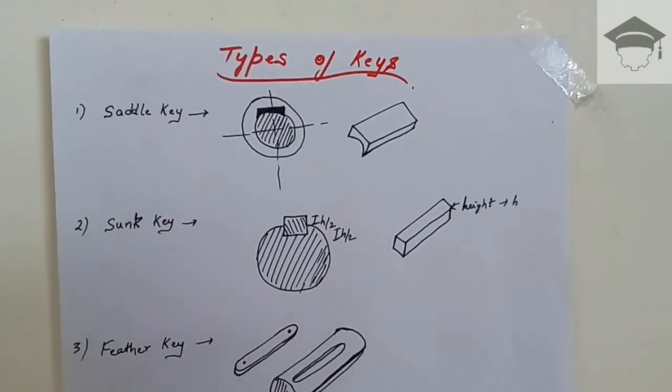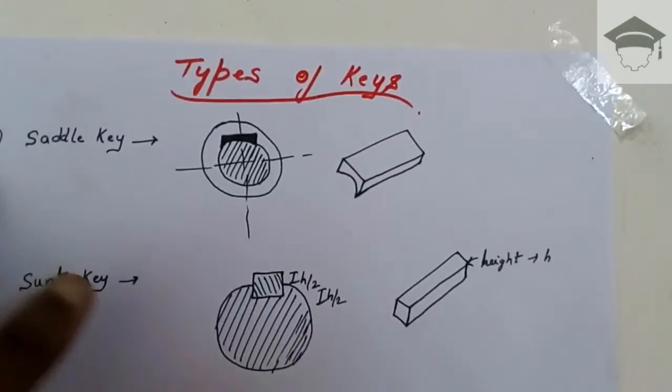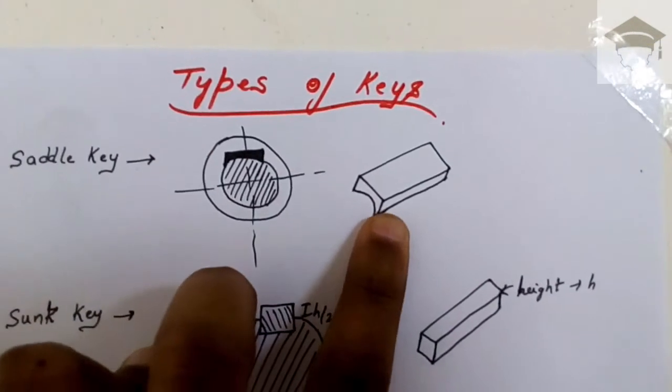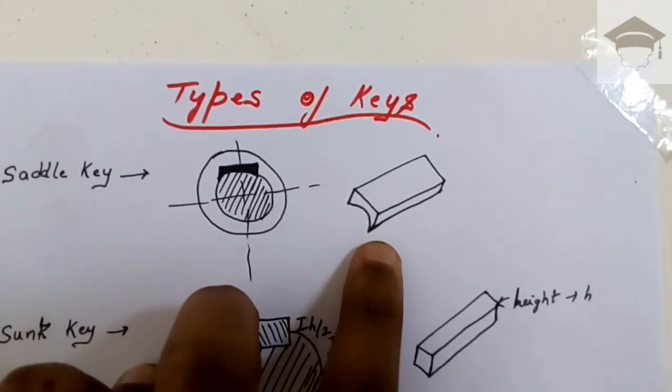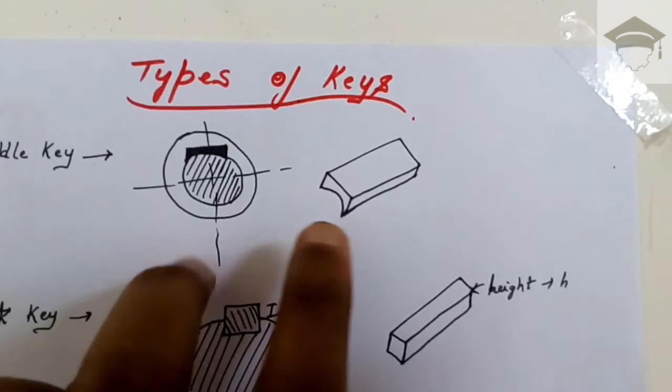The slot of the key is made into the hub, and this key is inserted by interference fit between the shaft and the hub.